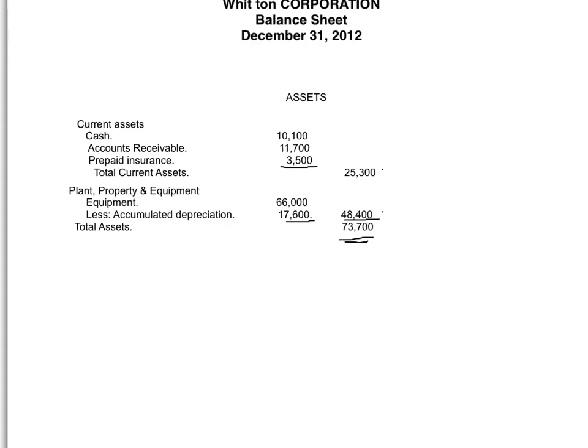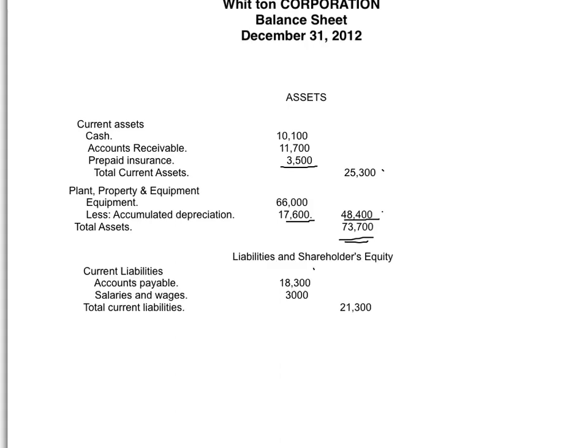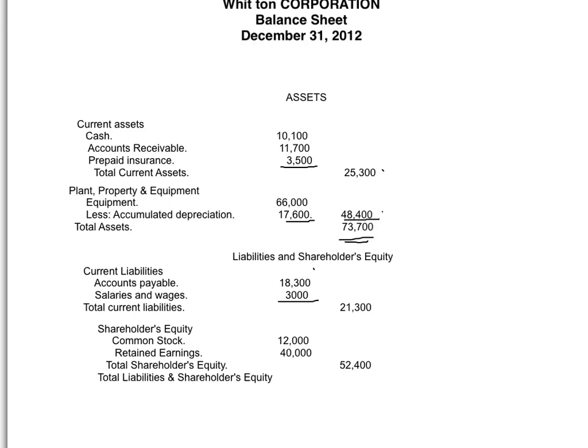We now look at liabilities and shareholders' equity. For current liabilities there are two: accounts payable $18,300 and salaries and wages payable $3,000. Total current liabilities are $21,300. There are no long-term liabilities, so the shareholders' equity section is next. The first item is common stock — the amount shareholders invested by purchasing stock. Then retained earnings comes from the retained earnings statement we completed earlier. The retained earnings is $40,400, giving total shareholders' equity of $52,400.